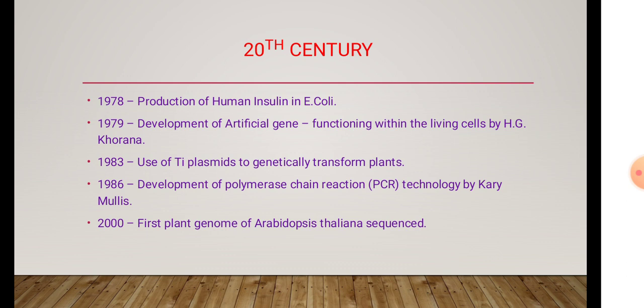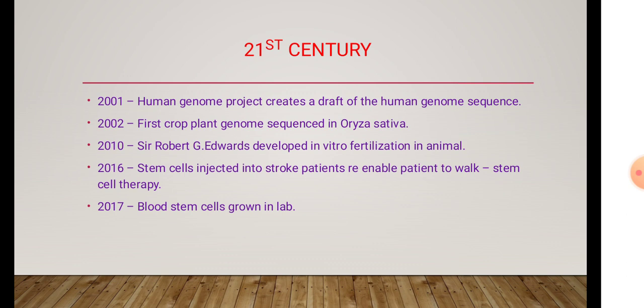The next slide shows the 21st century history of biotechnology. In 2001, the Human Genome Project created the genome sequence. In 2002, the plant crop genome was introduced in the common paddy plant Oryza sativa. In 2010, Robert Edwards developed an in vitro fertilization method in animals. During 2016, stem cells were injected into stroke patients with the help of stem cell therapy. During 2017, blood stem cells were grown in a lab.